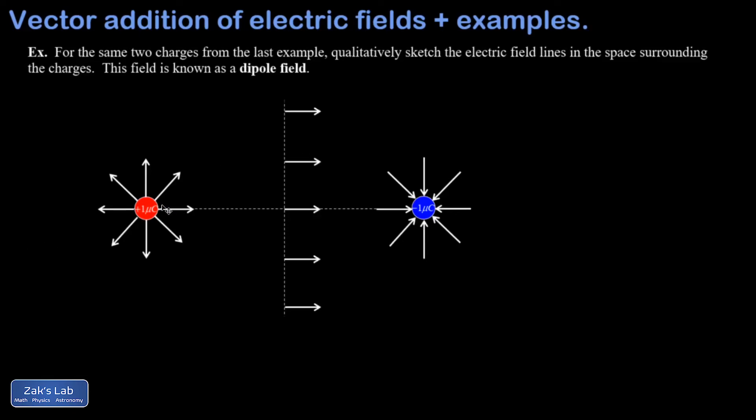So then the last phase of this sketch is to connect these field vectors at these individual points with a continuous field line. And that field line will tell you the direction of the electric field vectors at every point along the line. So here's what that looks like.